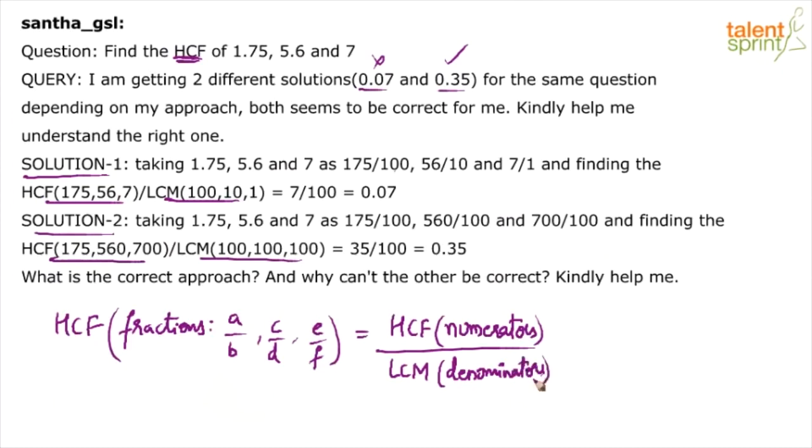Similarly, LCM of fractions, LCM of fractions is LCM of numerators by HCF of denominators. So, if you understand, this will be HCF of A, C, E, not A, B, C. Highest common factor of A, C, E, the numerators, and the least common multiple of the denominators, which is B, D, F. So, HCF of fractions is HCF of numerators by LCM of denominators.